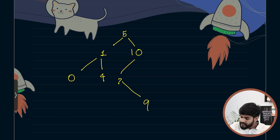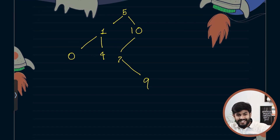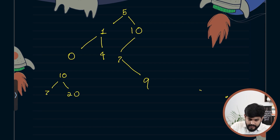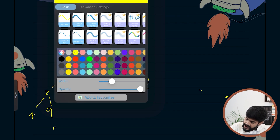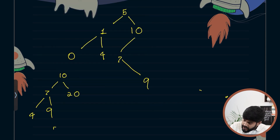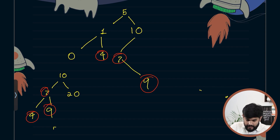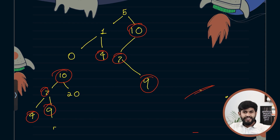Now we need two binary search trees. In the first tree we have 10, with 7 on the left and 20 on the right, and 4 and 9 as children of 7. The nodes that are common between the two trees are 4, 7, 9, and 10.